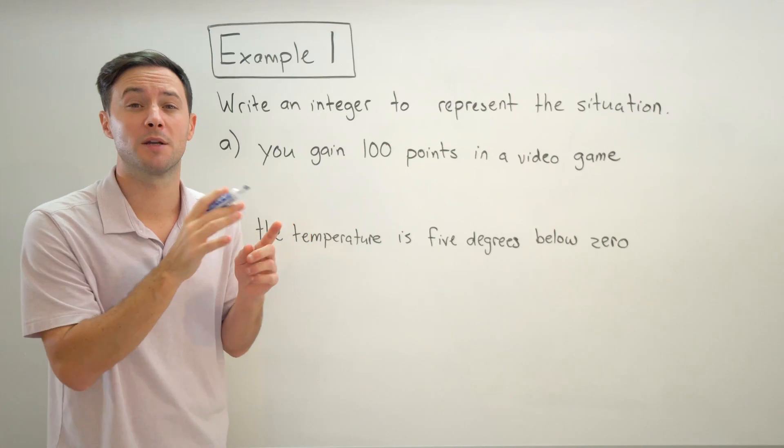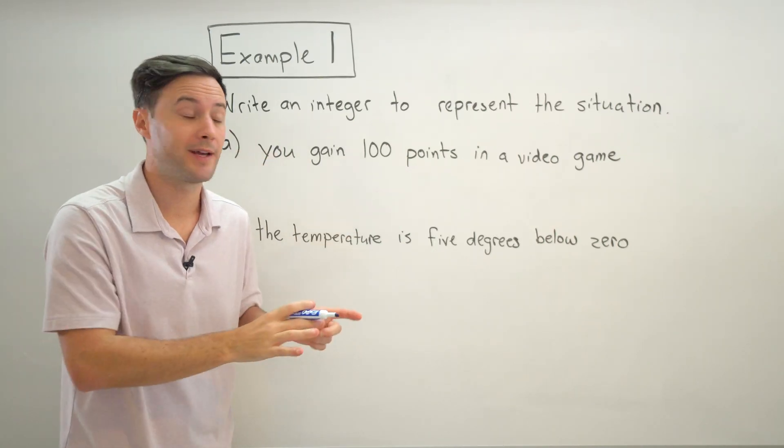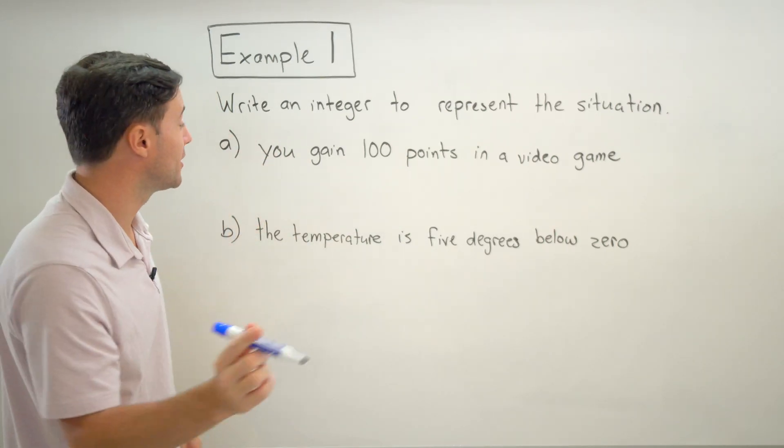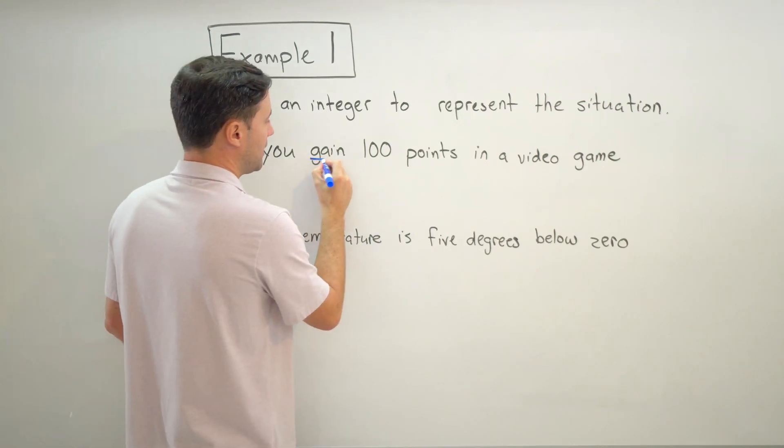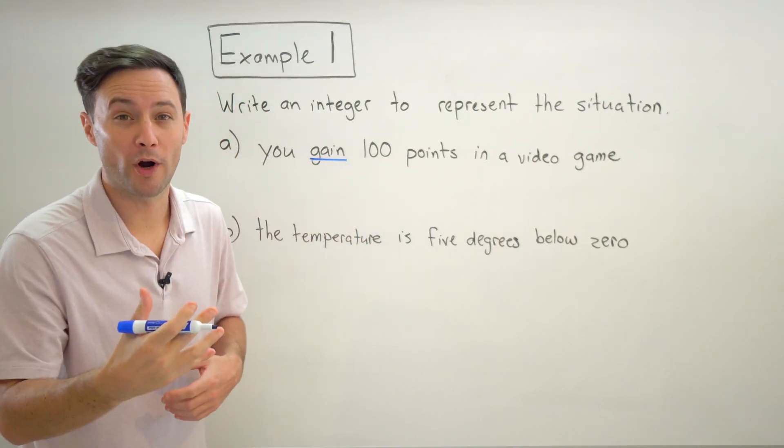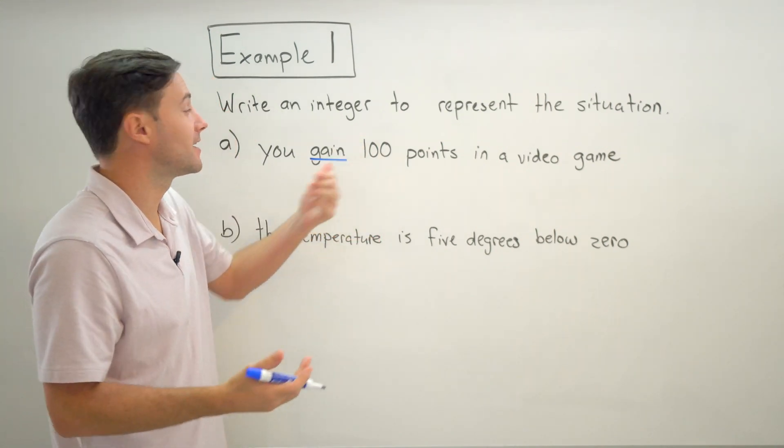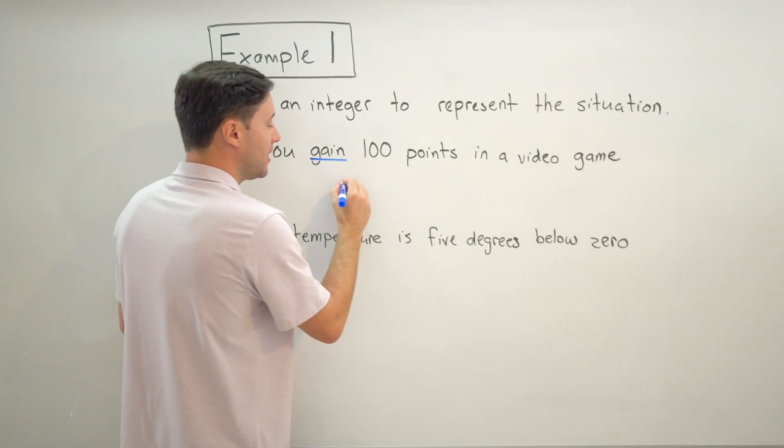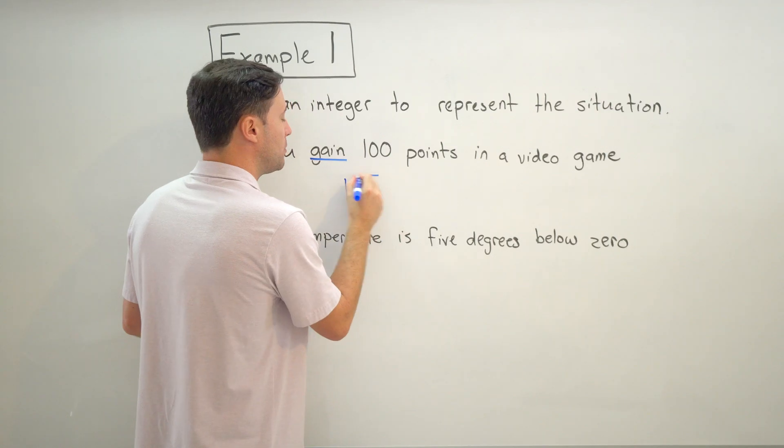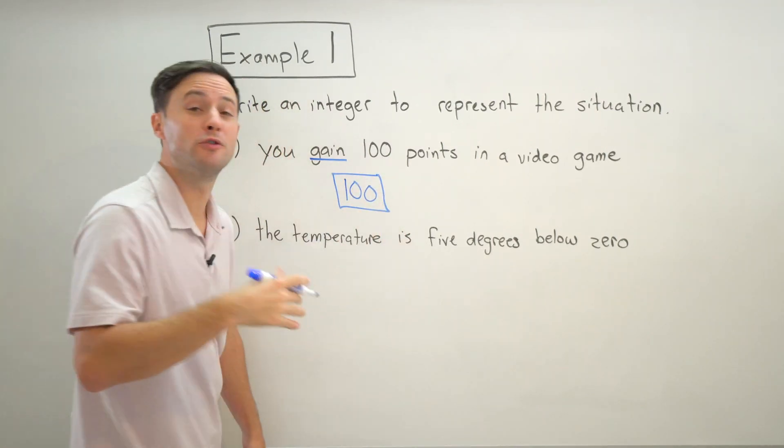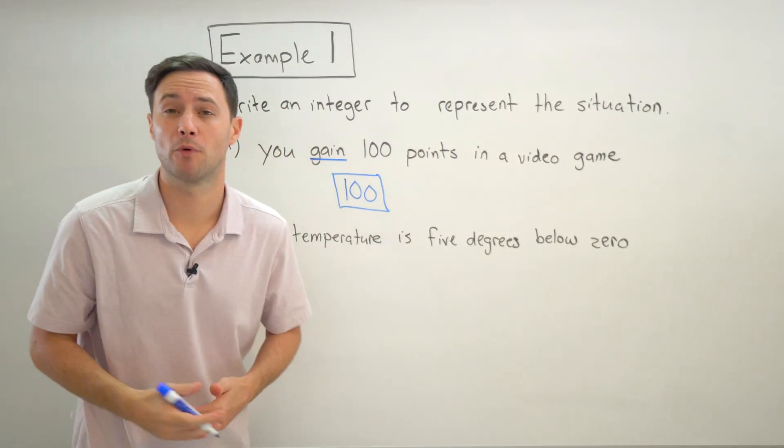For part a, it says you gain 100 points in a video game. So again, we're looking for a keyword that would tell us is that 100 points going to be positive or would it be negative. And hopefully you see that keyword is gain. So if we're gaining points, that's a positive right, that's good. So that means it's going to be a positive 100. The opposite of that would be lose points - lose would obviously mean that's negative 100.